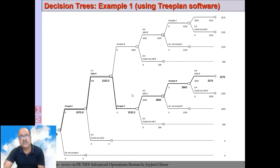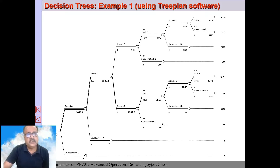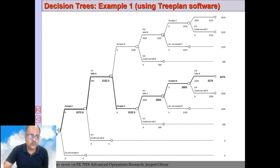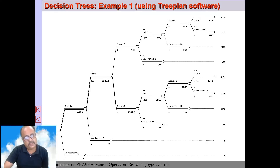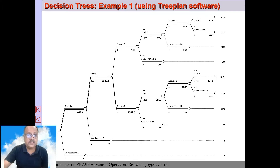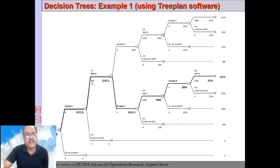This is the decision tree constructed using TreePlan. The first decision the decision maker takes is whether to accept to sell A or not to sell. This is a decision node, and the branches are decision branches. After accepting, there is a chance node — either the agent is able to sell A or not. There are probabilities associated with the chance, and the profit earned is recorded on each branch.